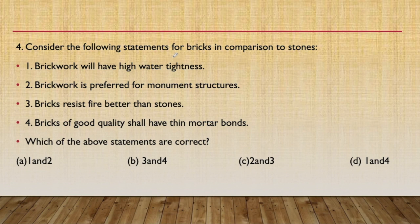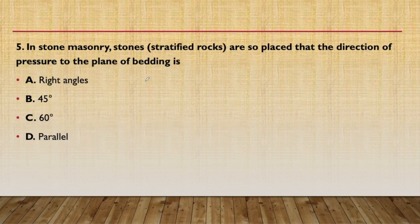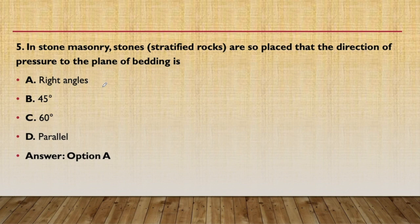Fourth question: considering statements comparing bricks to stones — brick work has high water tightness, brick work is preferred for monument structures, bricks resist fire better than stone, and bricks of good quality shall have thin mortar bond — these are evaluated for correctness. Fifth question: in stone masonry, stratified rocks are placed so that the direction of pressure to the plane of bedding is at right angles. Pressure is applied at right angles to the plane of bedding.